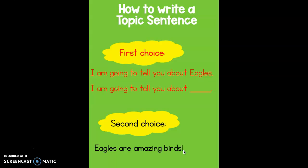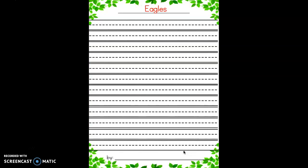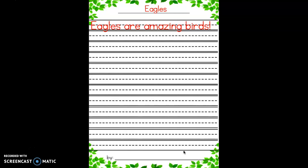I'm going to show you which one I chose to start my rough draft of my research report. Here's the rough draft paper — it will also be the good copy paper after we edit our writing. I decided to choose my topic sentence that reads: 'Eagles are amazing birds.' I wanted to go above and beyond, so I chose the second choice.